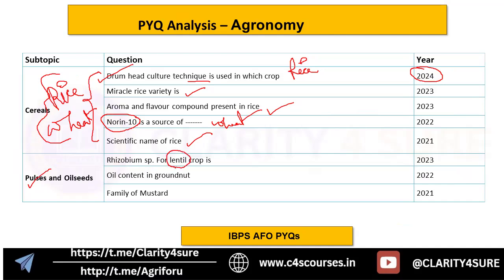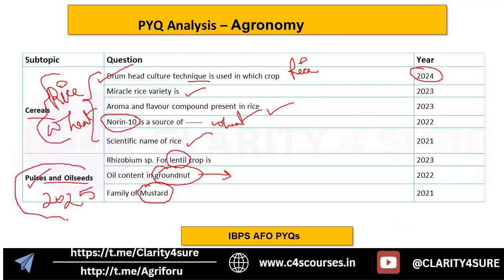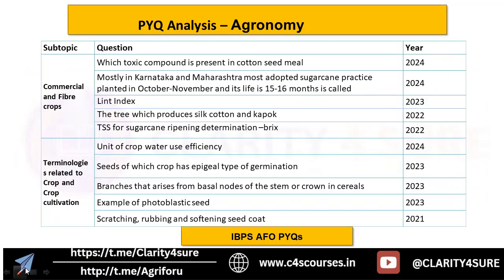For pulses and oilseeds, questions have been asked about which species of Rhizobium is suitable for lentil crop, the oil content in groundnut, and the family of mustard. Only major crops have been touched so far. For 2025, pulses and oilseeds become very important because the government has been giving much attention to them to reduce imports — so study these crops very attentively this year.